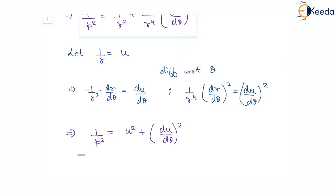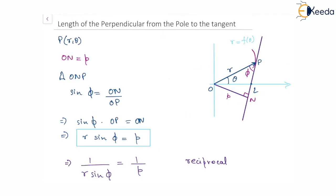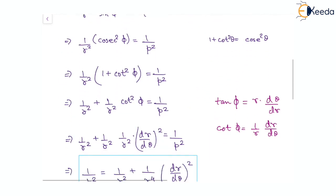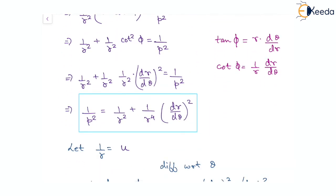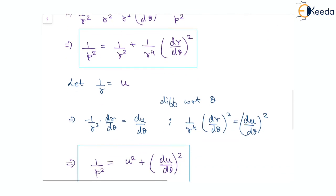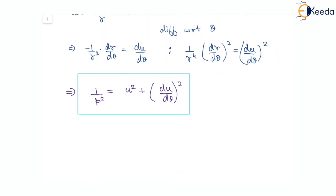Overall, when discussing the length of the perpendicular from the pole to the tangent, the three relations to remember are: first, r·sin(φ) = p, where p is the perpendicular distance; second, 1/p² = 1/r² + 1/r⁴·(dr/dθ)²; and third, 1/p² = u² + (du/dθ)², where u = 1/r. I hope things are clear here, thank you.